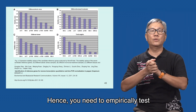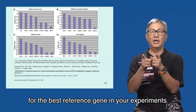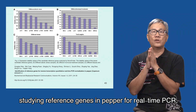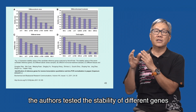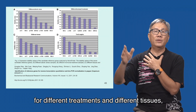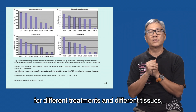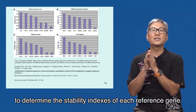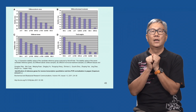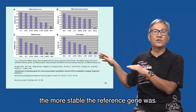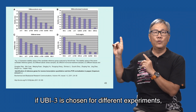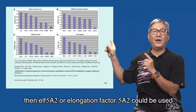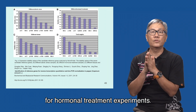Hence, you need to empirically test for the best reference gene in your experiments. In this paper published in 2011, studying reference genes in pepper for real-time PCR, the authors tested the stability of different genes for different treatments and different tissues, and they used a program called NormFinder to determine the stability indices of each reference gene — the lower the value, the more stable the reference gene was. In this case, if UBI3 is chosen for different experiments, then EF1-α or elongation factor 1-α could be used for hormonal treatment experiments.